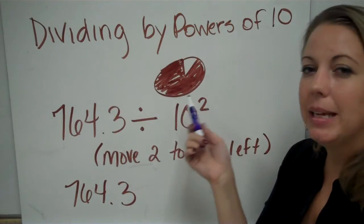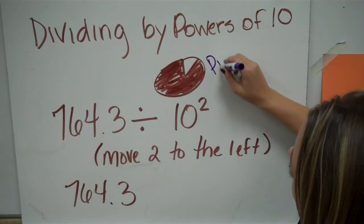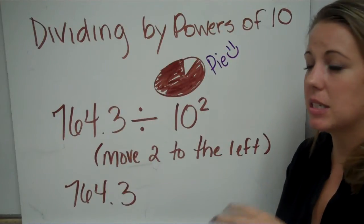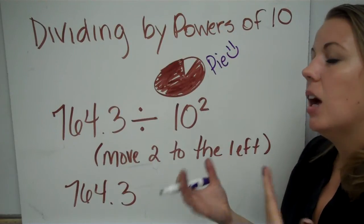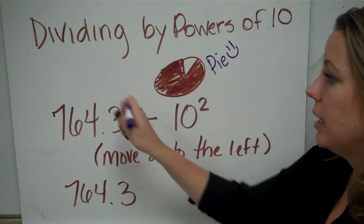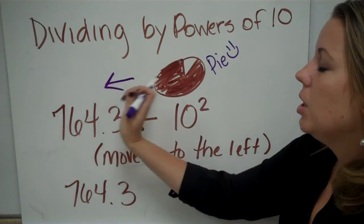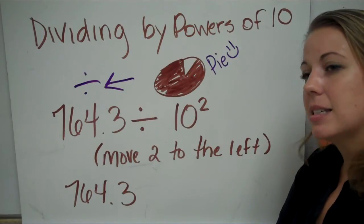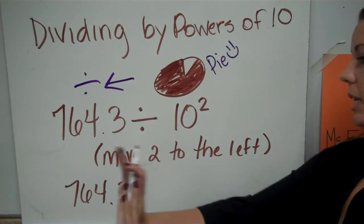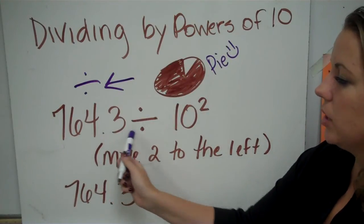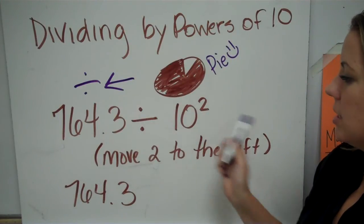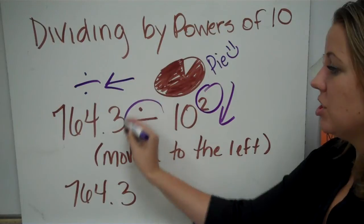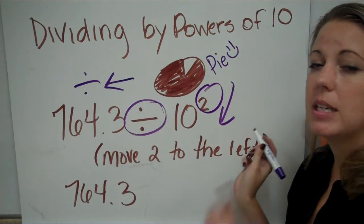Dividing by powers of ten is a piece of pie — it's the same as multiplying by powers of ten, except when you're dividing your number is not going to get larger, it's going to get smaller. So you're going to move your decimal to the left when you divide. Division tells us left, and the exponent tells us how many times.